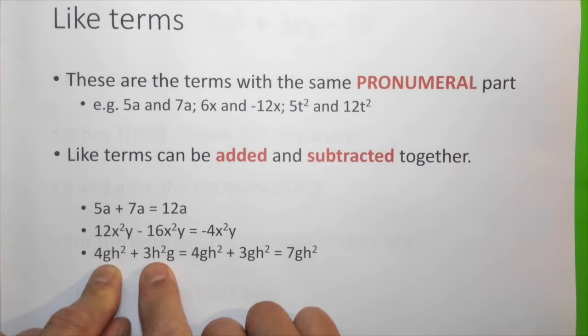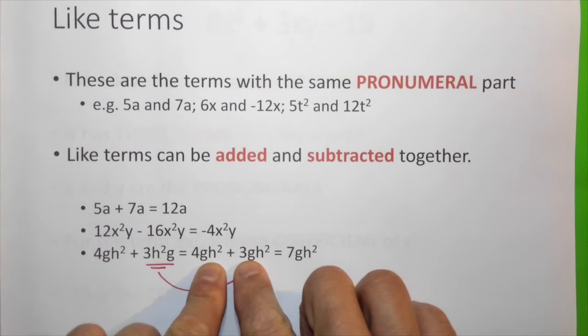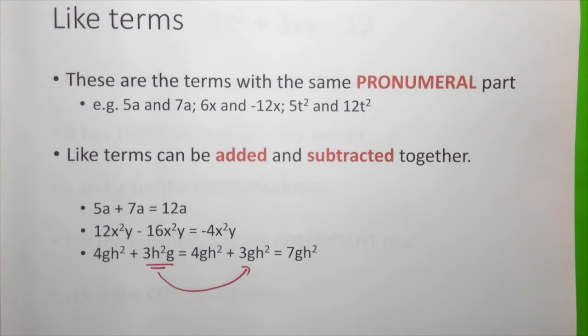This one, 4gh squared plus 3h squared g. At first glance, this is different. But if we rearrange this term, we actually make it into 3gh squared. And now, we have two terms with the same pronumeral part. Therefore, we can add it together and it's 7gh squared.